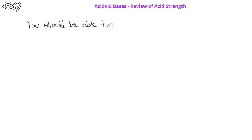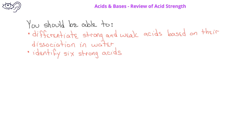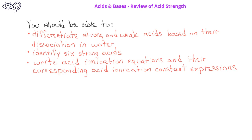By now, you should be able to differentiate strong and weak acids based on their dissociation in water. You should be able to identify six strong acids. You should be able to write acid ionization equations as well as their corresponding acid ionization constant expressions. Finally, you should be able to compare strengths of acids based on their acid ionization constant values.